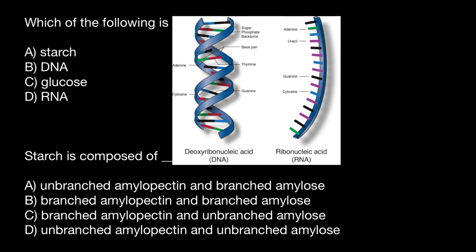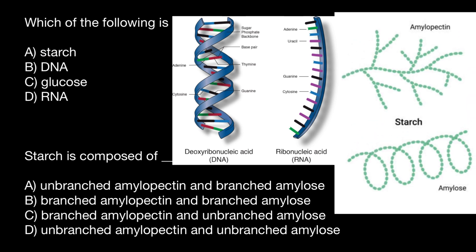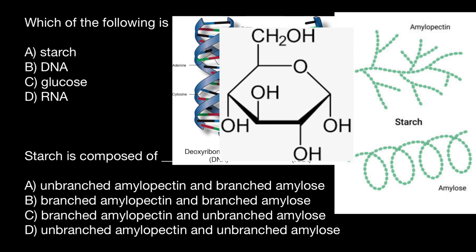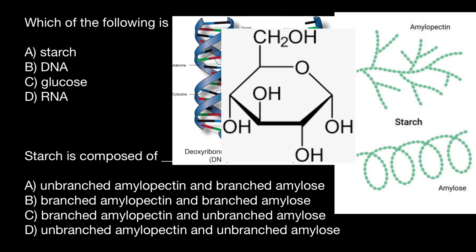Now let's consider starch. Here's a picture of the starch. You also see that starch is made of the repetitive units of glucose. And here's the molecule of glucose. So you see now that glucose, which is answer C, is not an example of a polymer. So this is going to be our choice, and all the rest are polymers.